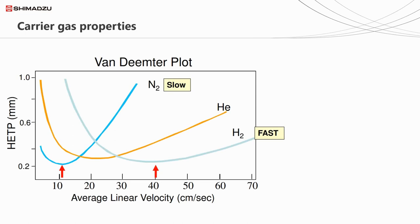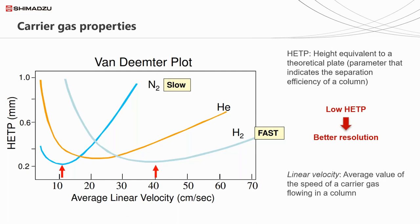The way in which we use a carrier gas and pass it through the GC column is quite complex. There are a variety of gases we can choose, and different speeds and pressures we can pass them through the column. One of the ways to assess this is to look at something called a Van Deemter plot. What we're looking at here is a graph of two properties: the average linear velocity - the speed at which you're pushing your gas through the column - and something called height equivalent to theoretical plates, or HETP. Essentially, it's a measure of separation or resolution, and a lower value of HETP is better, giving us better resolution and more separation between our peaks.